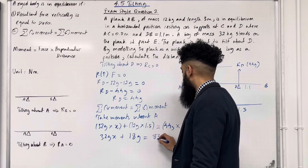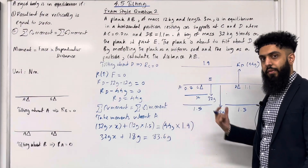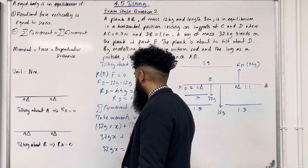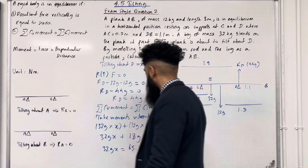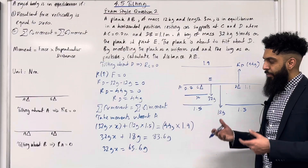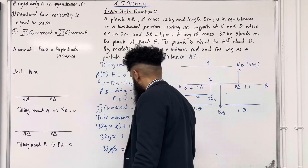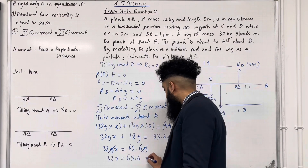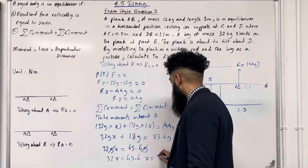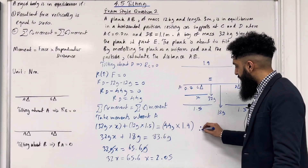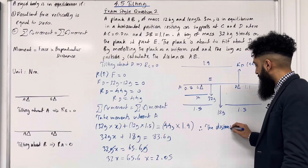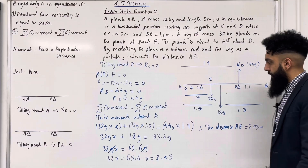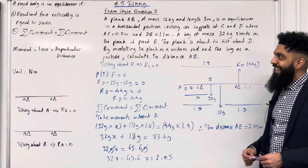So 32gX + 18g = 83.6g. Taking 18g to the right-hand side: 32gX = 83.6g − 18g = 65.6g. Dividing both sides by g: 32X = 65.6. Therefore X = 65.6 ÷ 32 = 2.05. The distance AE is 2.05 metres. That completes exam style question 2 and this teaching video on 4.5 Tilting.